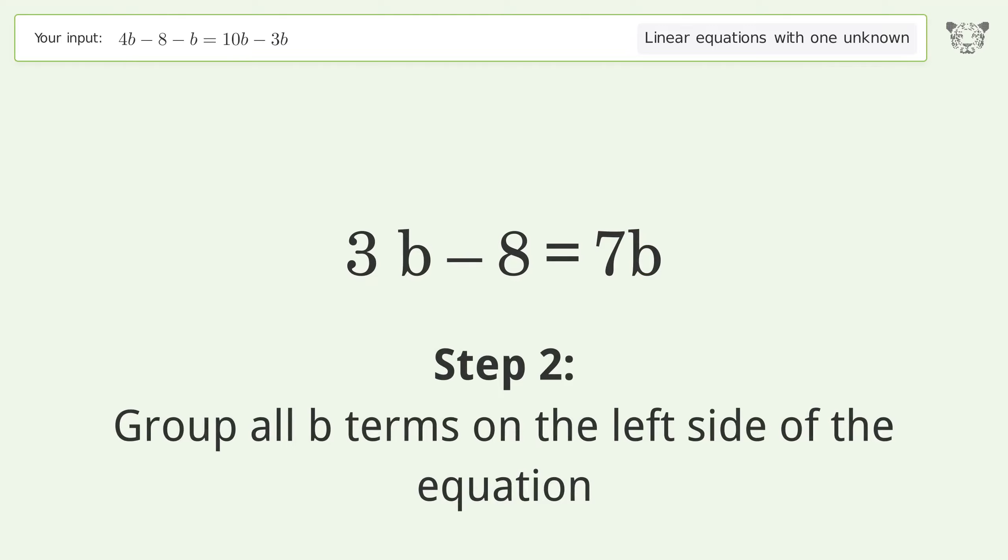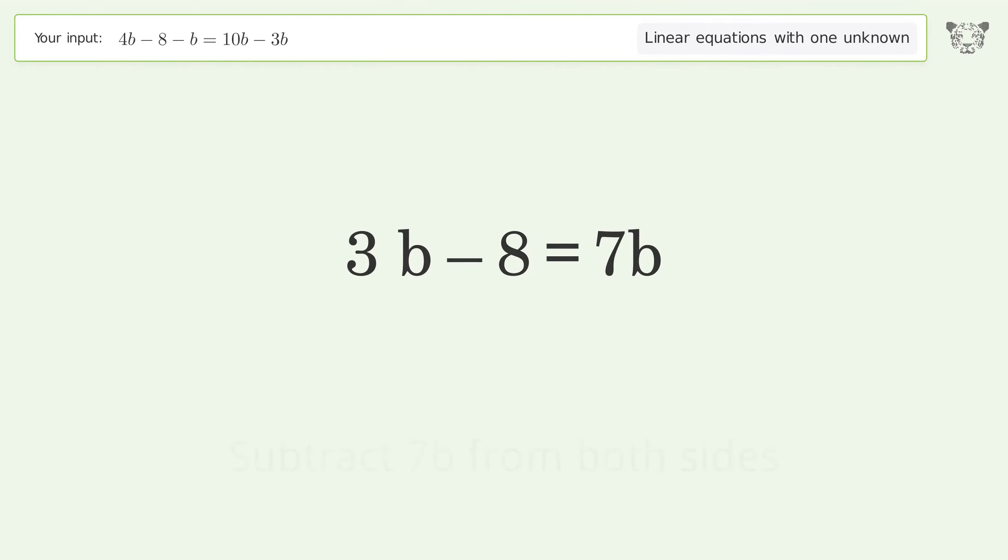Group all b terms on the left side of the equation. Subtract 7b from both sides, group like terms, and simplify the arithmetic.